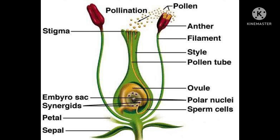Pollination is the first step of fruit formation, and fertilization is the second important step — the vital part needed for a fruit to form. Thank you all, have a nice day.